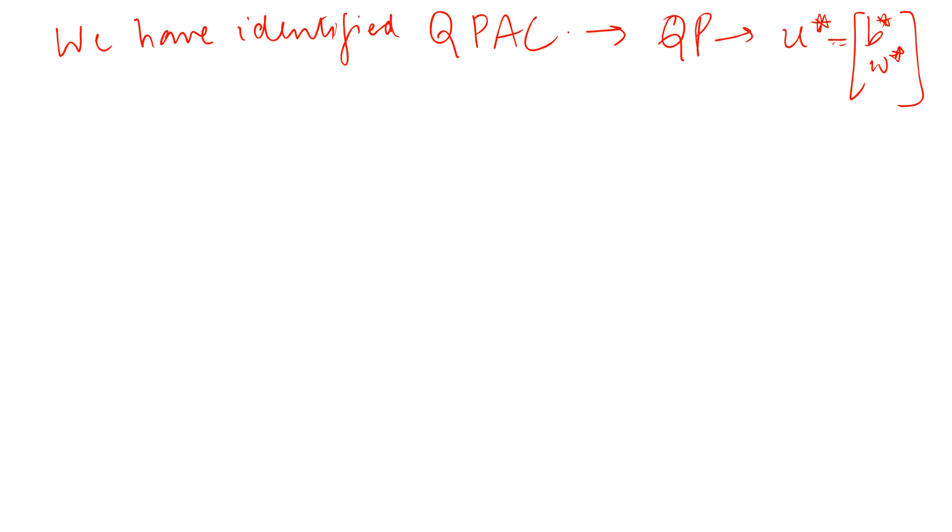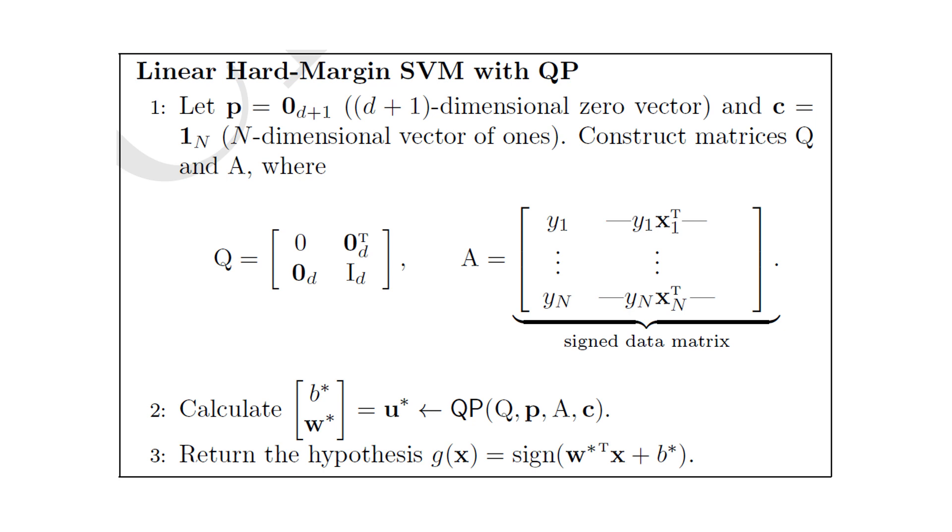All right. So this overall algorithm, also termed as the linear hard margin SVM with QP, is given here. So if P is some vector of zeros and C is N dimensional vector of ones, we can construct the matrices from the data. The Q and the A matrices here and then put them in a solver, this QP solver, Q, P, A, C are the inputs to my solver, which gives me the optimal U star. And then the question arises, what is my final hypothesis? Well, my hypothesis is this, because this is a classification problem, where I have these optimal weights and my optimal bias that is nothing but this entire thing is defining my hyperplane.